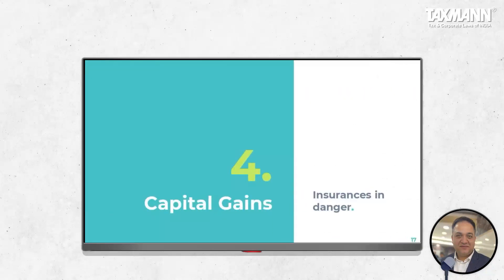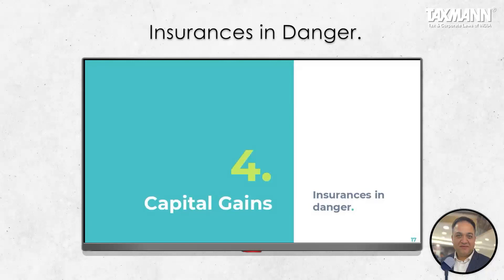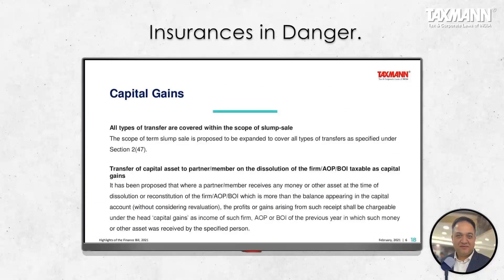Moving to capital gains — 'insurance is in danger.' First, all types of transfers are now covered within the scope of slump sale. There were Supreme Court judgments saying slump sale only by way of transfer should be covered, but now they have changed the definition of slump sale to include all transactions — whether by sale, transfer, or anything — as specified in Section 2(47).